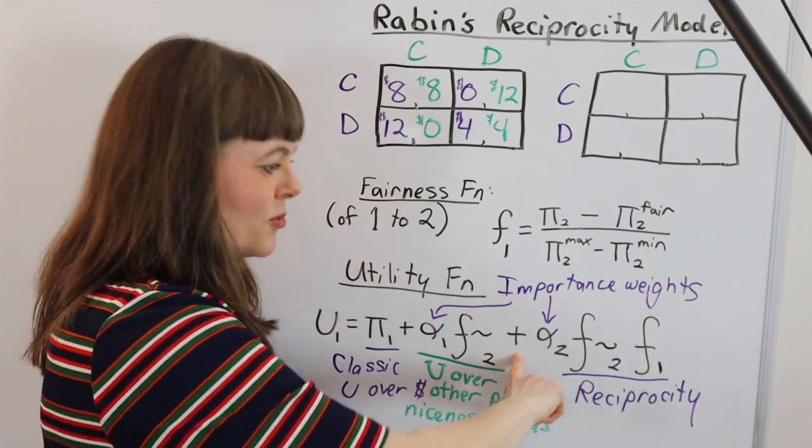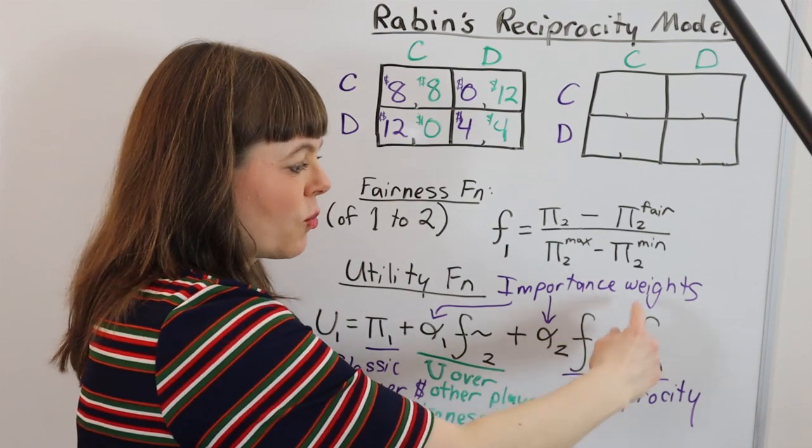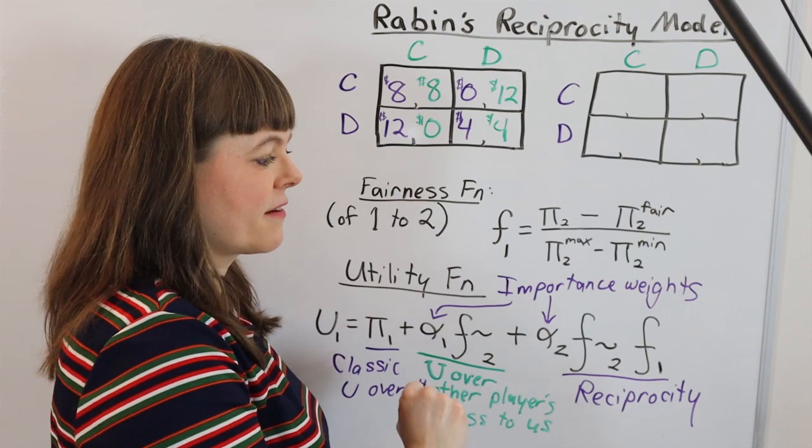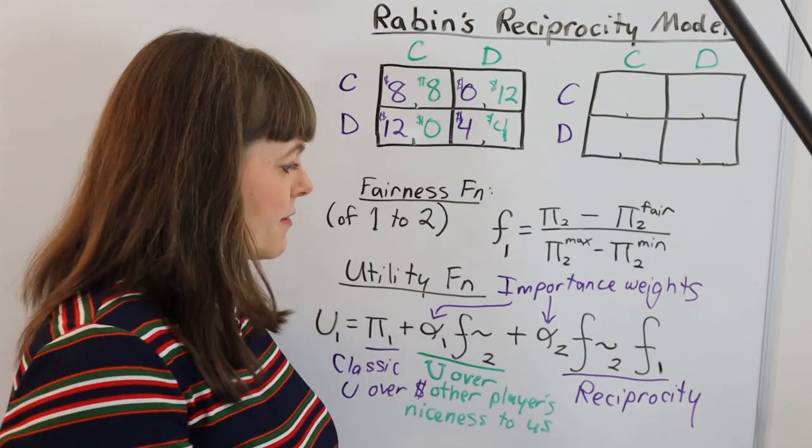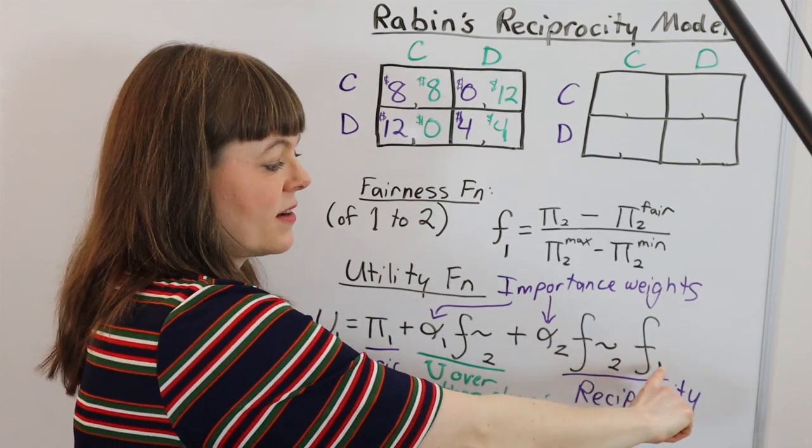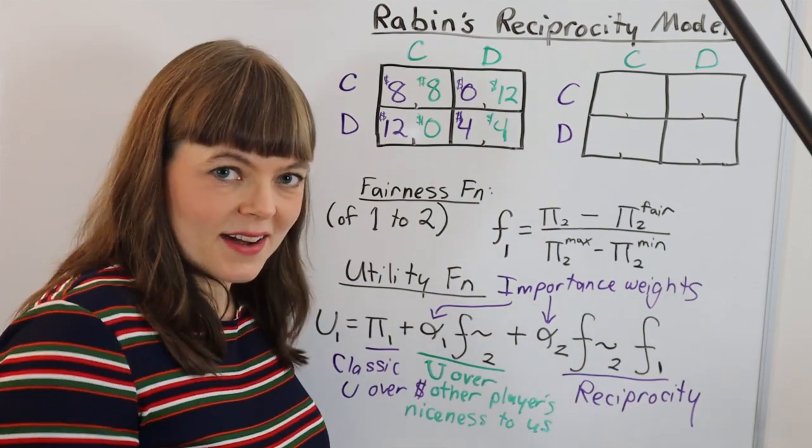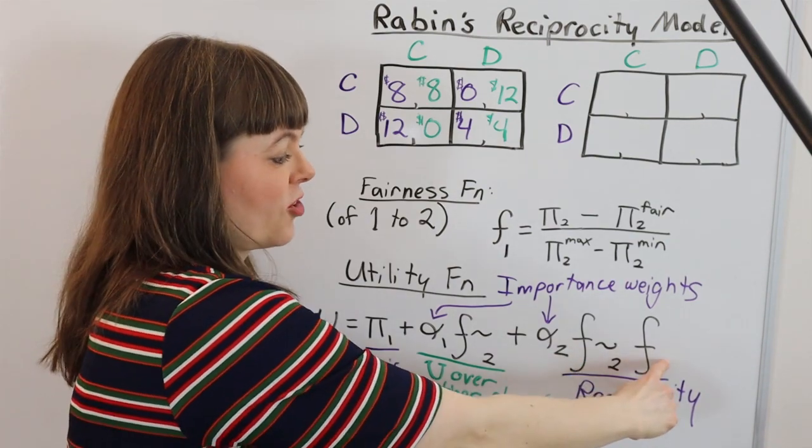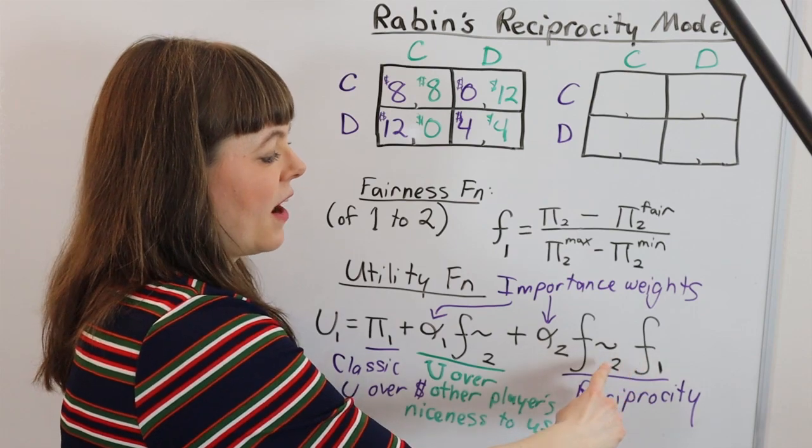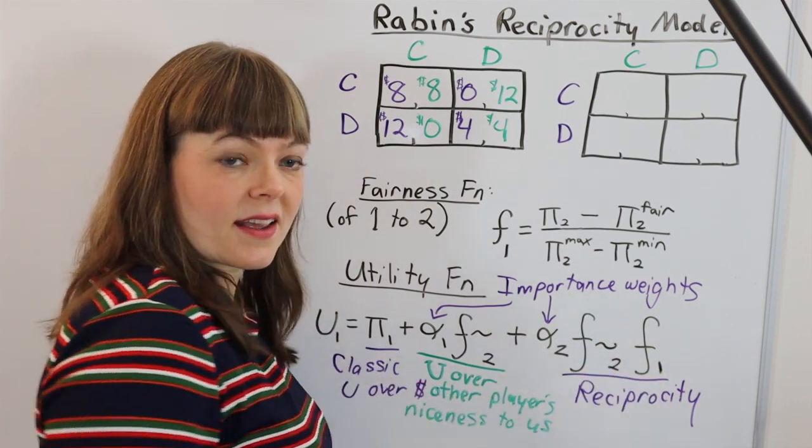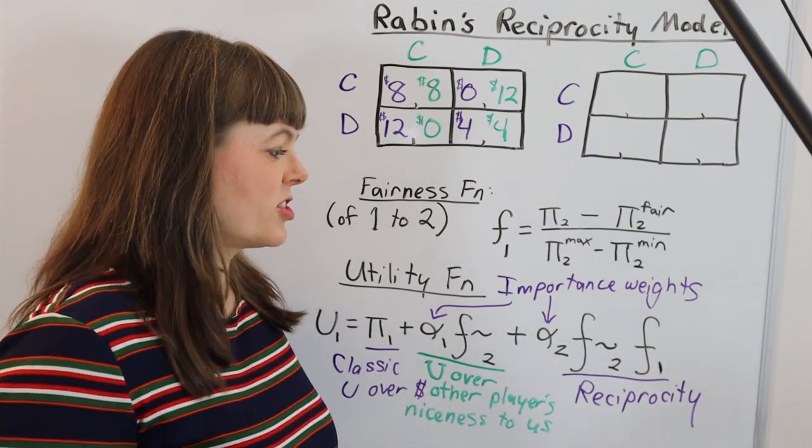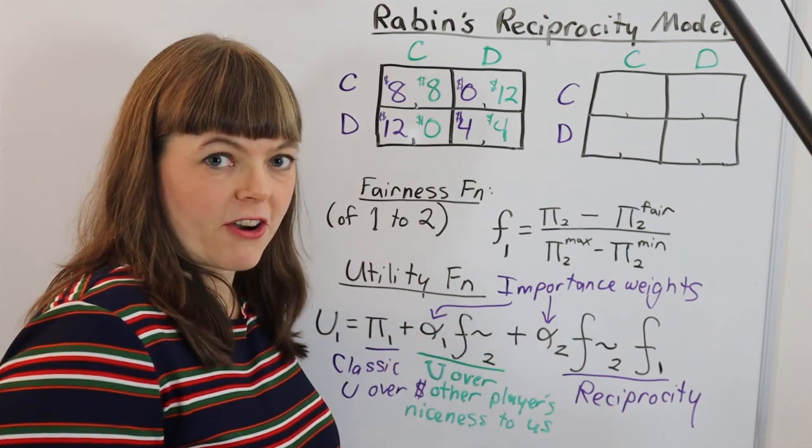So you get positive utility from matching mean with mean, those both being negative. And you also get positive utility from matching nice with nice. But you get negative utility if they're mean and you're nice, or negative utility if they're nice and you're mean.